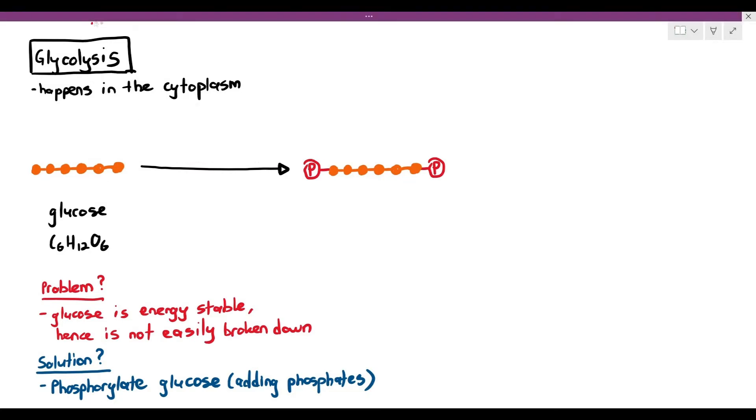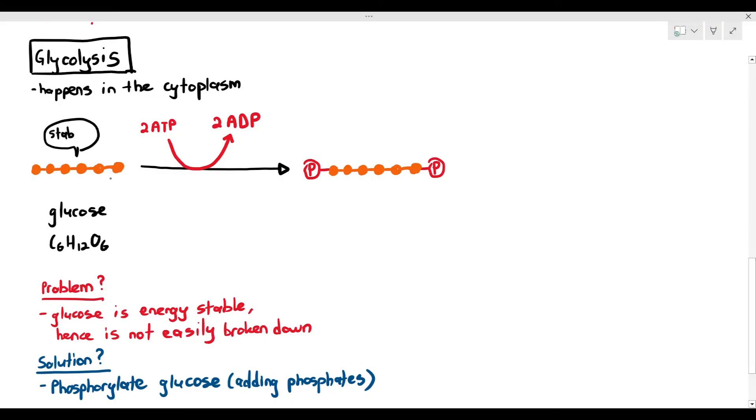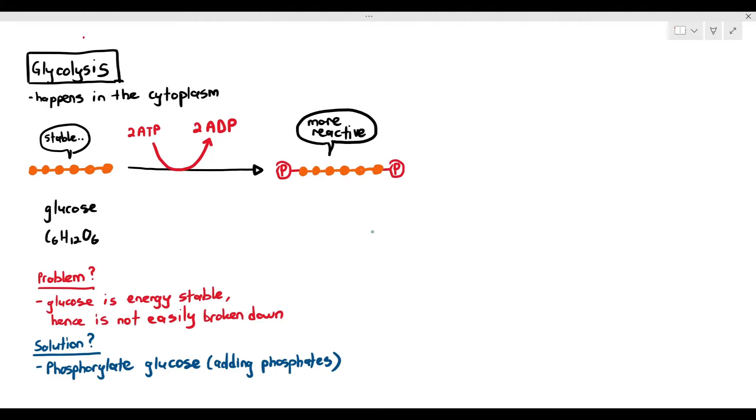To simplify this, the glucose molecule is first phosphorylated using two ATP molecules, which will become two ADP. That glucose molecule now has two phosphates attached to either side. From stable, it becomes unstable or more reactive. This is good. It becomes more reactive.